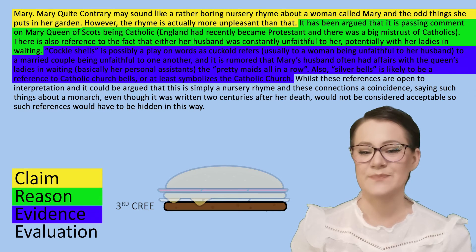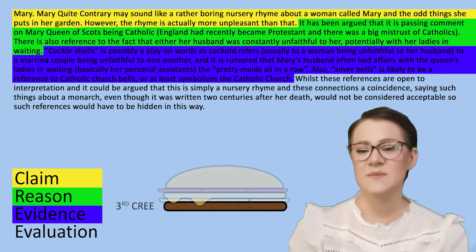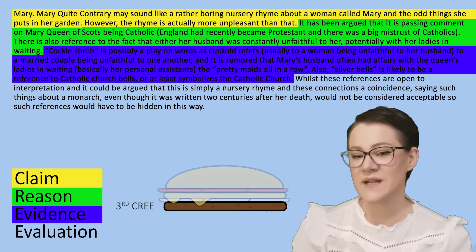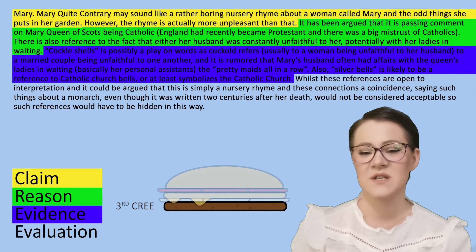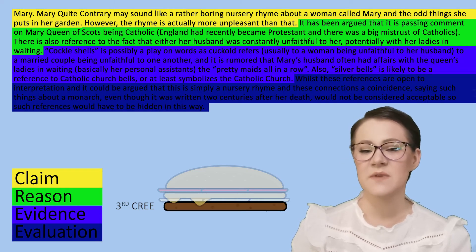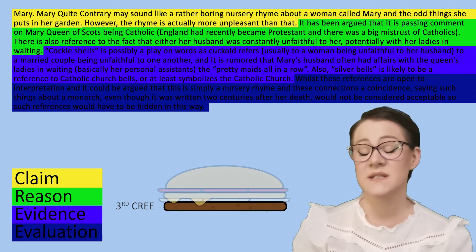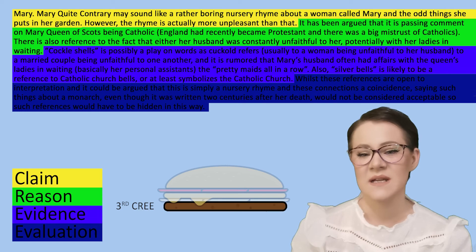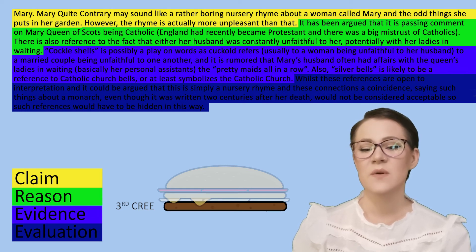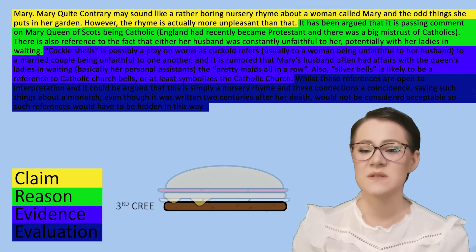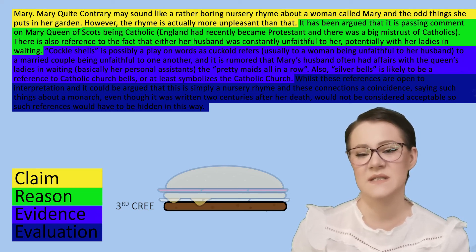Also, 'silver bells' is likely to be a reference to the Catholic Church bells, or at least symbolises the Catholic Church. Whilst these references are open to interpretation, and it could be argued that this is simply a nursery rhyme and that these connections are a coincidence, saying such things about a monarch — even though it was written two centuries after her death — would not be considered acceptable, so such references would have to be hidden in this way.